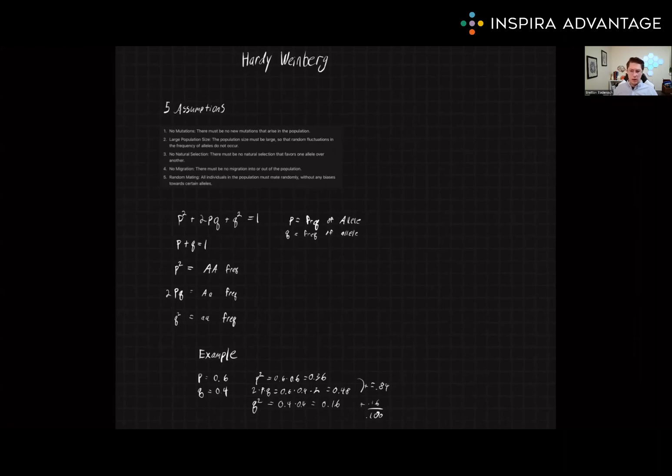In conclusion, the Hardy-Weinberg equilibrium is a theoretical concept in population genetics that describes how the frequency of alleles in a population remains constant from generation to generation, given these five key assumptions. Understanding the Hardy-Weinberg equilibrium and its assumptions are essential because it provides a baseline for understanding the genetic makeup of a population and how it can change over time, in addition to being the most commonly tested genetics application problem on the MCAT.